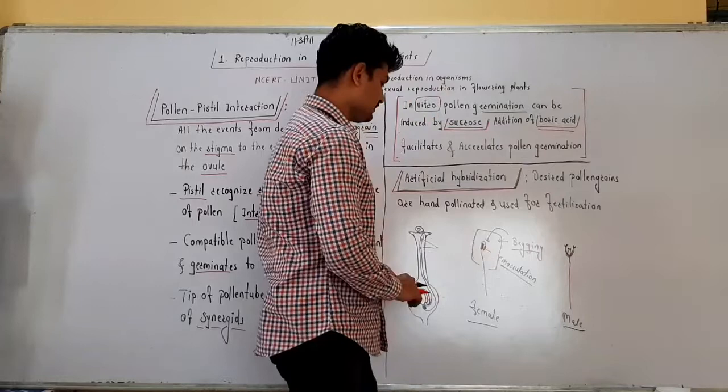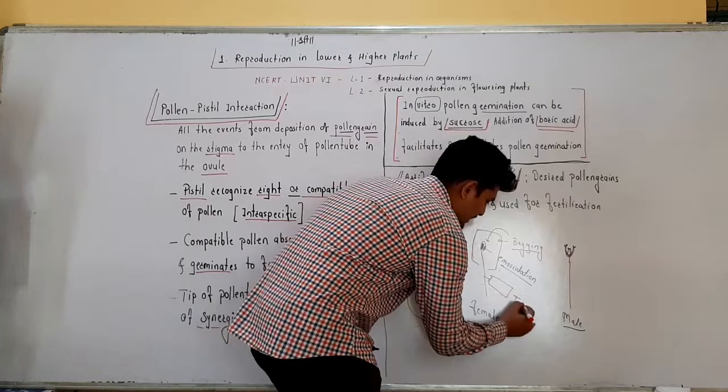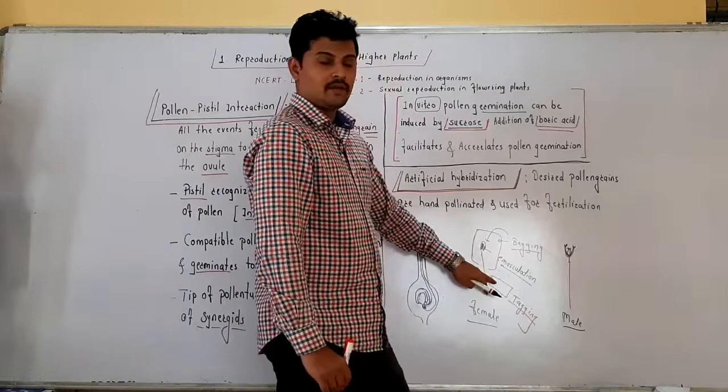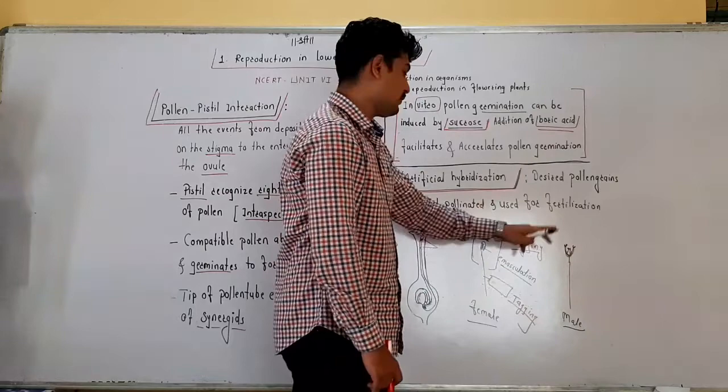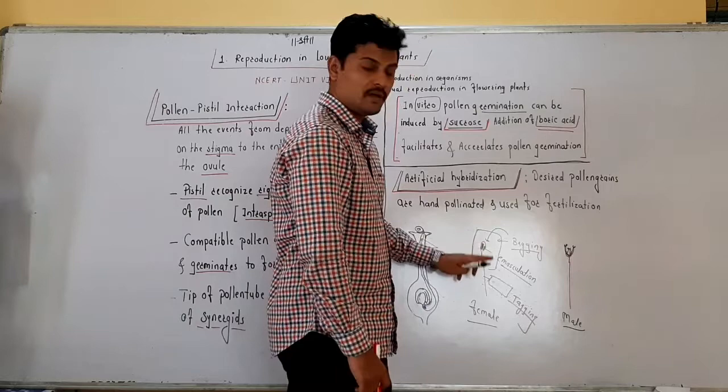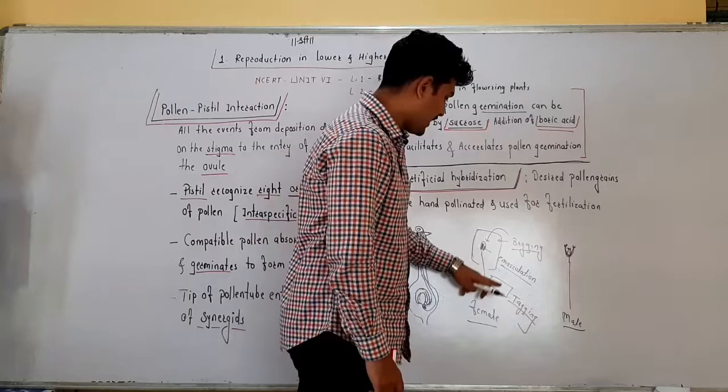Emasculation and bagging can be performed in artificial hybridization. We can also provide a tag — this is called tagging. The tag will have the information of the date of pollination and which type of pollen grain or pollen grain from which plant is transferred over the stigma. All this information is present on the tag. So bagging, tagging, and emasculation are performed in artificial hybridization.